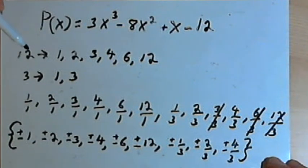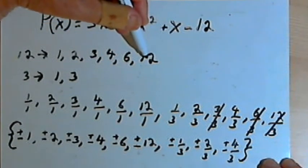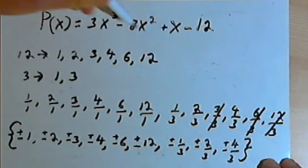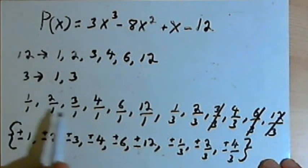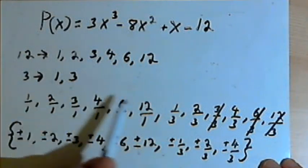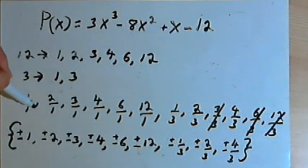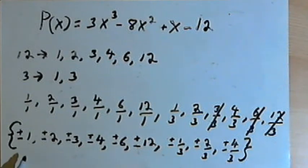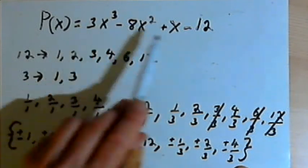So once again, all you have to do is take the constant at the end of the polynomial and write out all its factors, remembering they're plus or minus numbers. Then take the leading coefficient and write out all of its factors. Make all possible fractions using the factors of the constant as numerators and the factors of the leading coefficient as denominators. Simplify all the fractions, get rid of duplicates, add your plus or minus signs, and that will give you the set of all numbers that might possibly be rational roots for this polynomial.